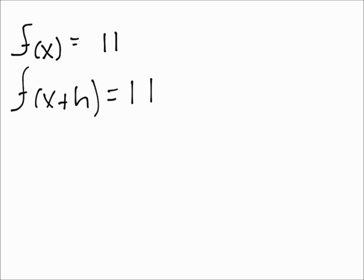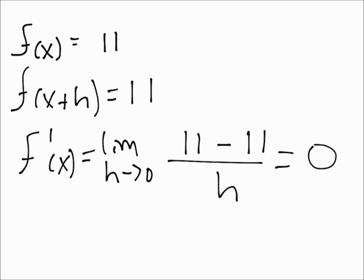And then just by plugging it in the formula, limit h equals to 0, we're going to have 11 minus 11 over h. This is 0, and that's our answer. So whenever you're trying to get the derivative or the instantaneous rate of change of simply a number, you will always get 0. Don't let that confuse you.